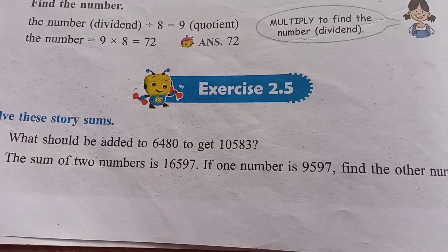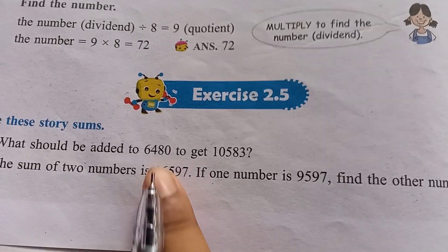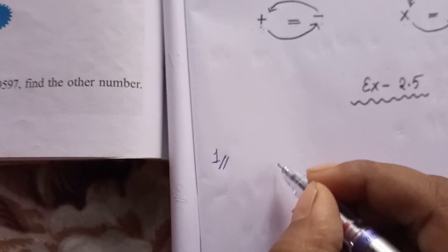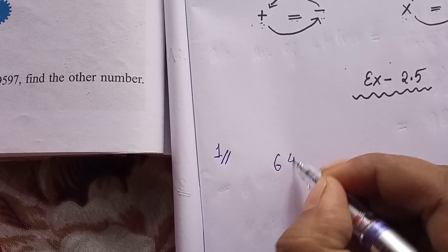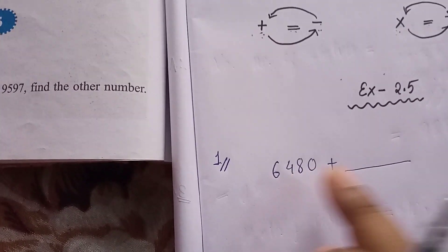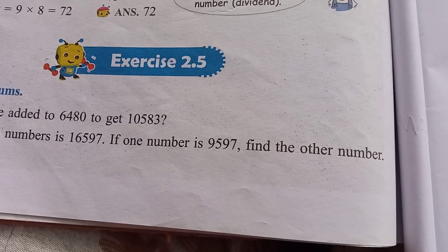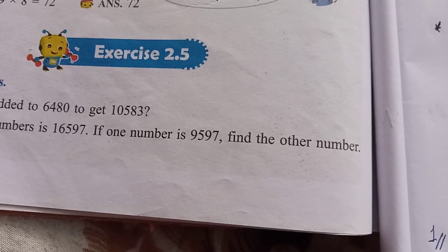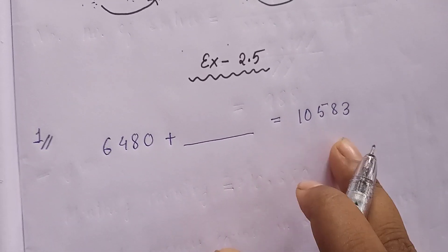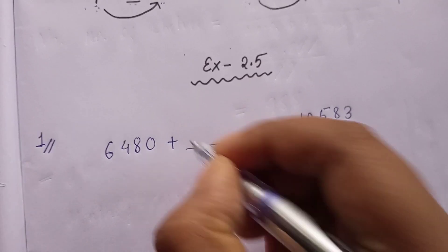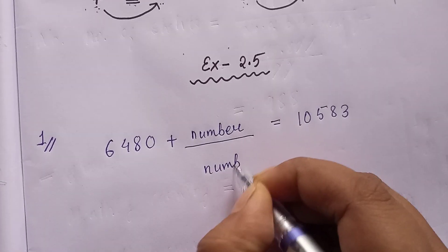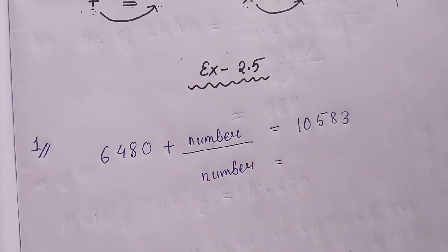Look at Question 1: What should be added to six thousand four hundred eighty to get ten thousand five hundred eighty-three? So the question is: which number should be added to 6,480 to get 10,583? We have to find out that unknown number.